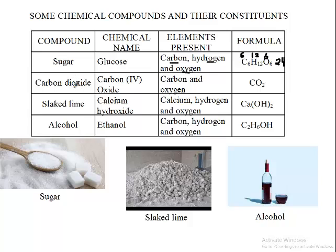Carbon dioxide is produced when we burn. Its chemical name is carbon(IV) oxide — the Roman numeral here stands for 4. So carbon dioxide is chemically called carbon(IV) oxide.